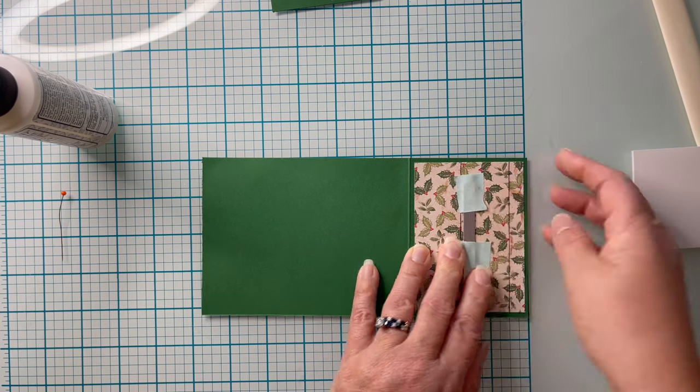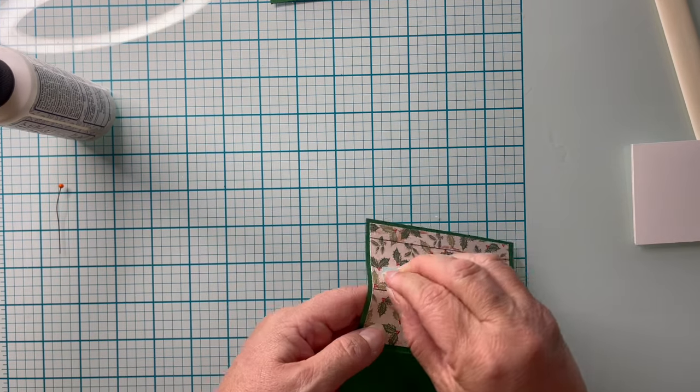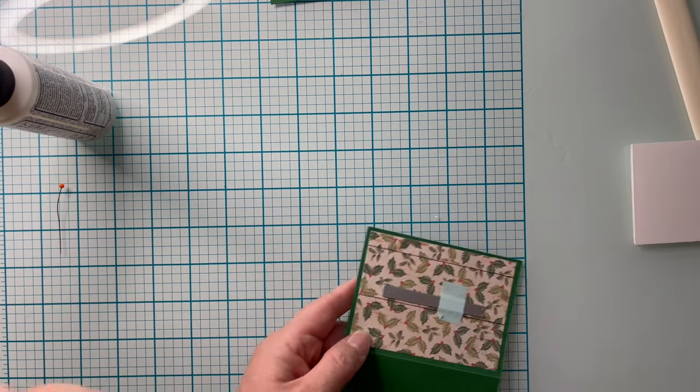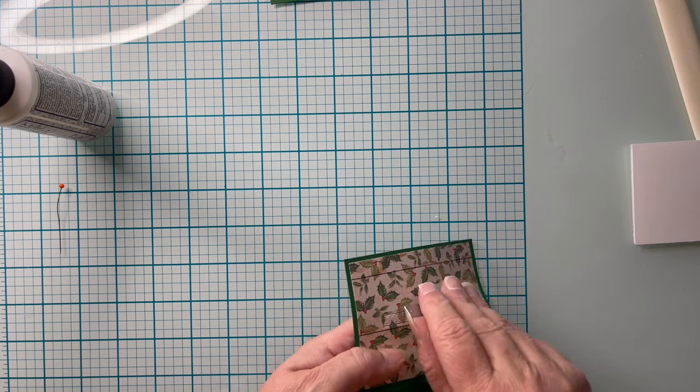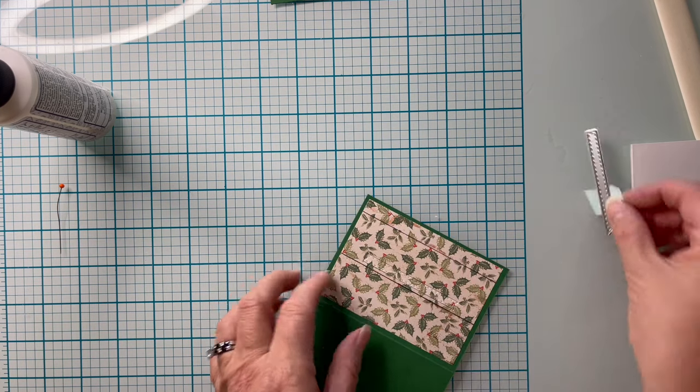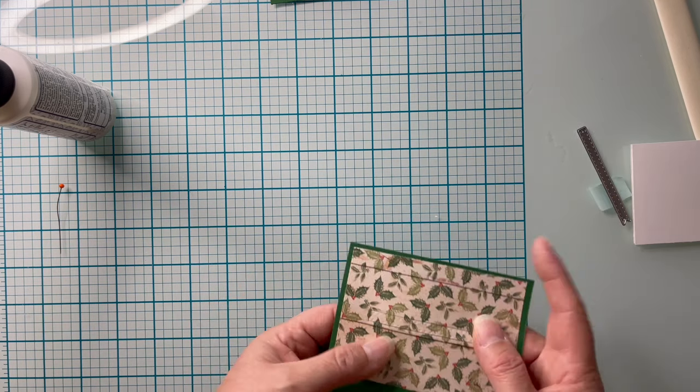I'm going to hold that down with some scrapbook.com's mint tape. This is just a low tack tape. You could use whatever you're used to using. If you're not used to using that and you don't have any low tack tape but you have a post-it pad, just cut the sticky part off. That's a great way to use that.